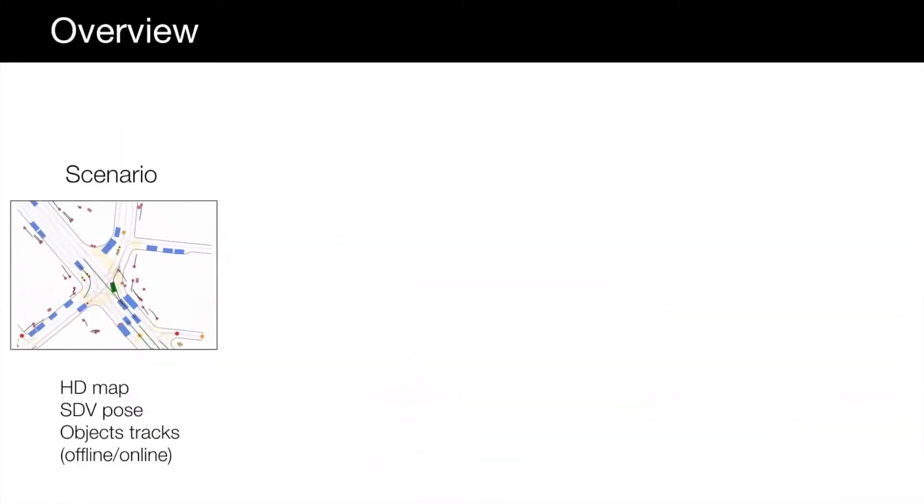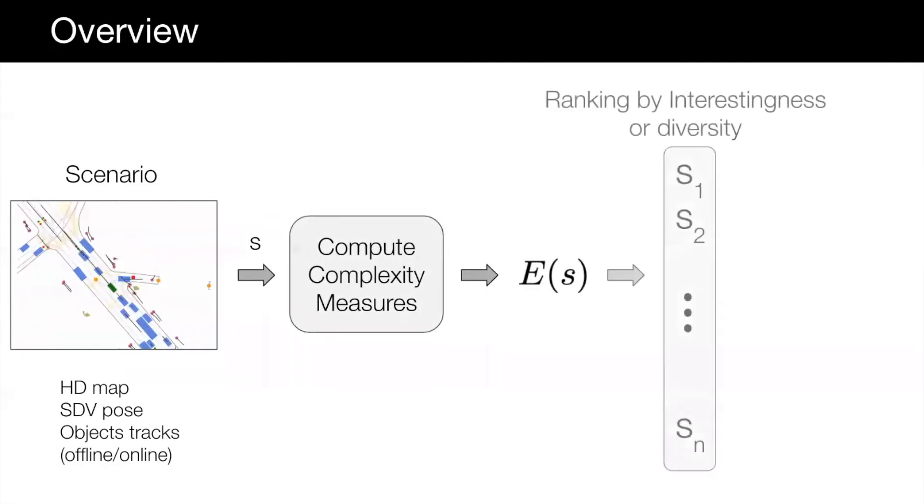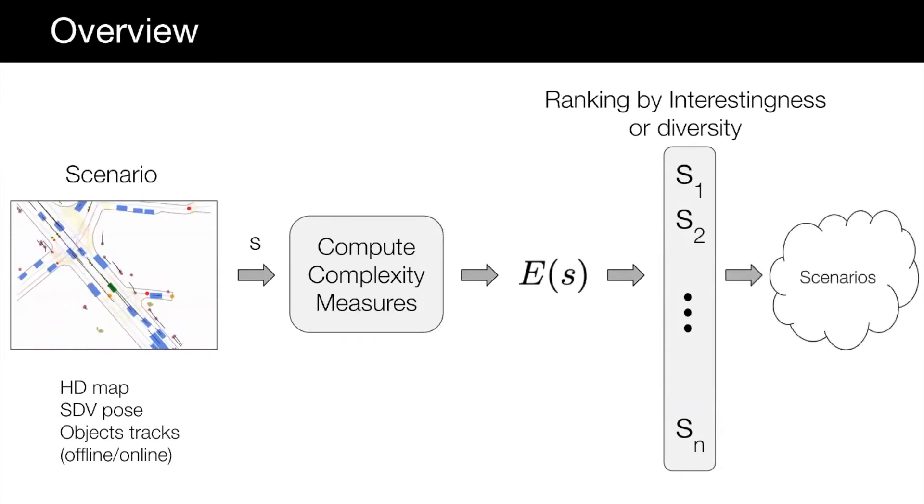Here is an overview of our proposed method. Given a traffic scenario including HD map, SDV pose, and the object tracks from an offline or online perception stack, we compute a set of diverse complexity measures. Using this vector of complexities, we rank the scenarios based on interestingness or diversity and decide on the set of scenarios to label.